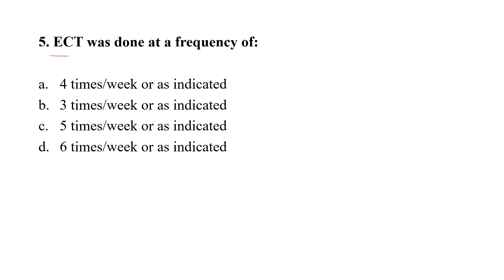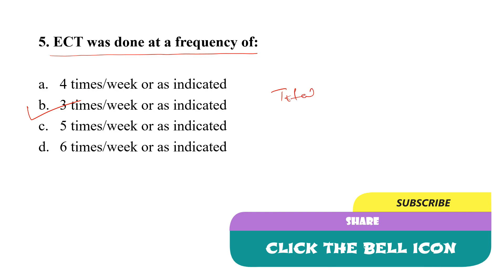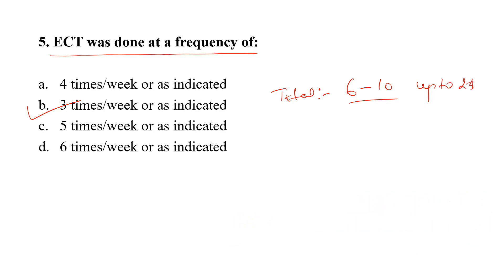Question number five: ECT is done at a frequency of — Option A: 4 times per week or as indicated. Option B: 3 times per week or as indicated. Option C: 5 times per week or as indicated. Option D: 7 times per week or as indicated. The correct option is option B — 3 times per week or as indicated. The total number of ECT sessions can be 6 to 10 times, or sometimes up to 25 times or as indicated.